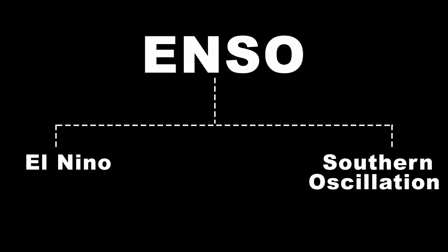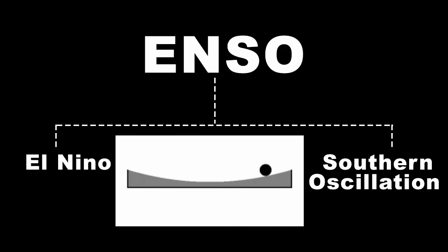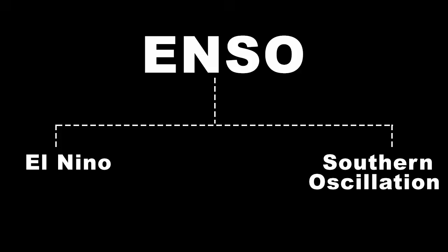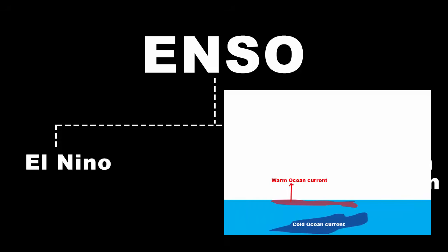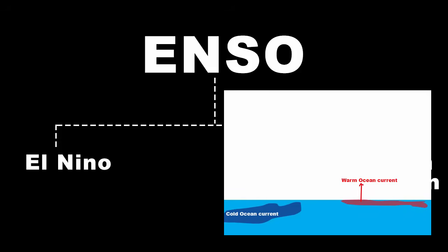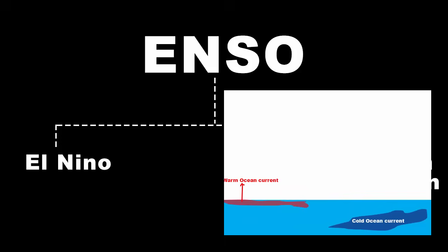When you look at the term oscillation, it gives us a hint that something oscillates from one place to another, or back and forth. Well, it's the temperature that we are talking about — and not just any temperature, ocean temperature. It is the ocean temperature that oscillates back and forth from warm temperature to cold temperature and vice versa.